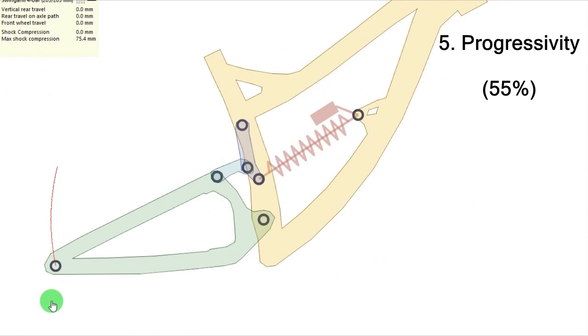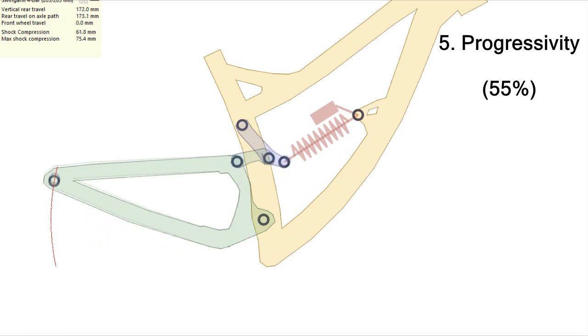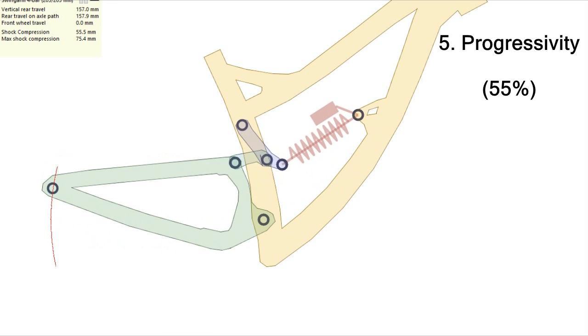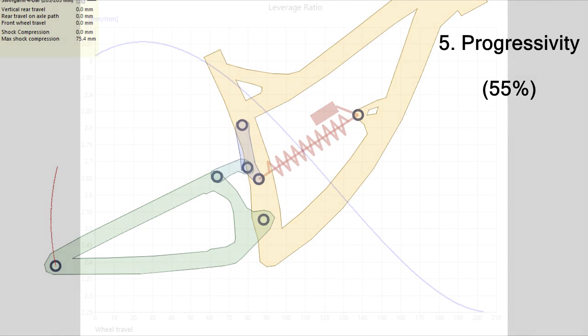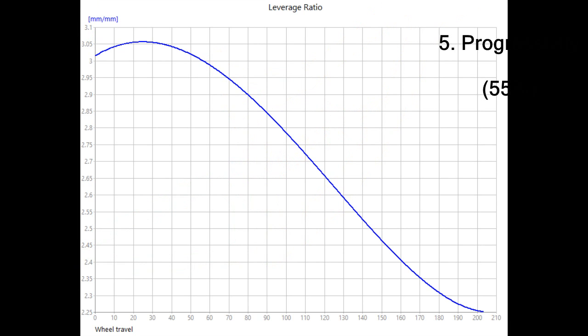So what about the progressivity? The progressivity is how the shock rate changes during travel. And it's a quite progressive bike, about 55% of progressivity. So it's slightly higher than the average for a downhill bike. You can see here the leverage ratio curve.